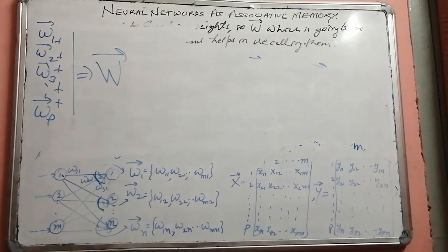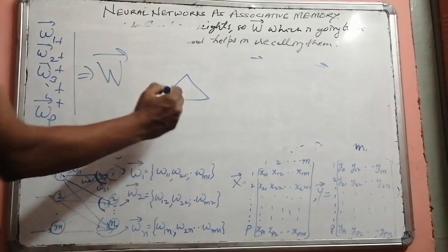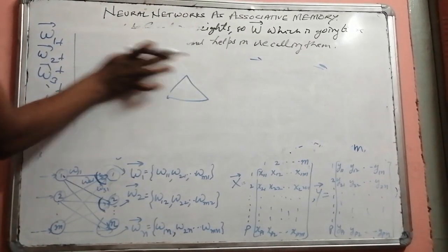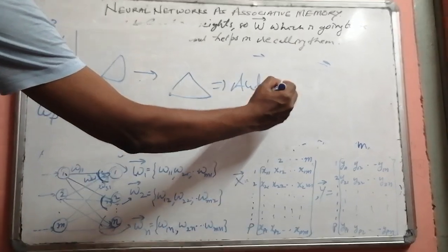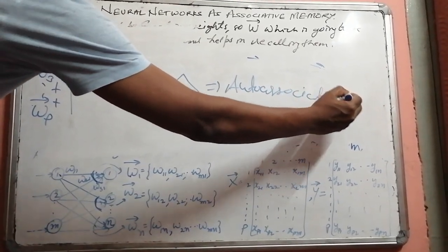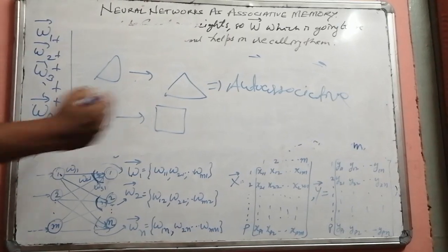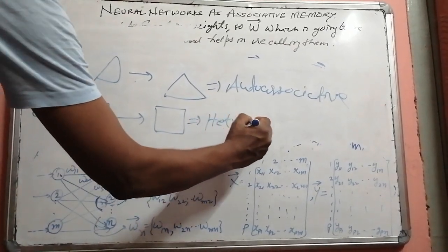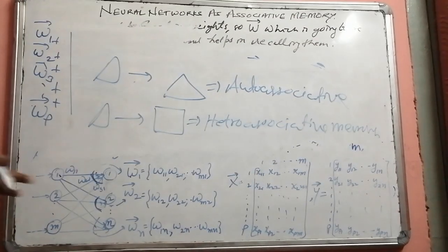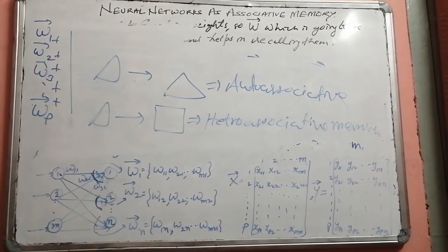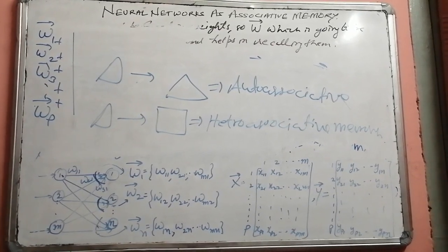To recap: when a triangle is stored corresponding to a triangle, these networks are called auto-associative memory. When corresponding to a triangle, a different pattern such as a rectangle is stored, these are termed hetero-associative memories. The example we looked at here falls under hetero-associative memories. However, the learning mechanism of adjusting the weights remains the same in auto-associative memories.